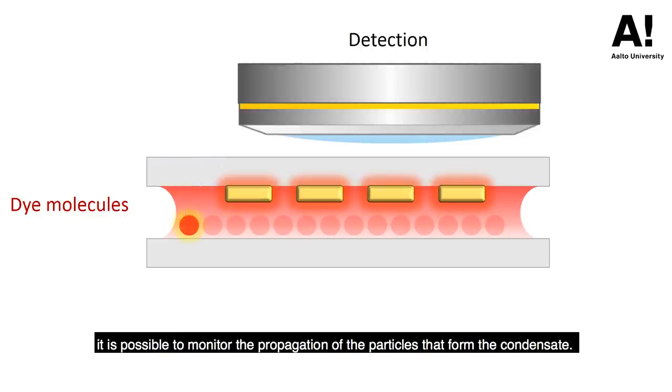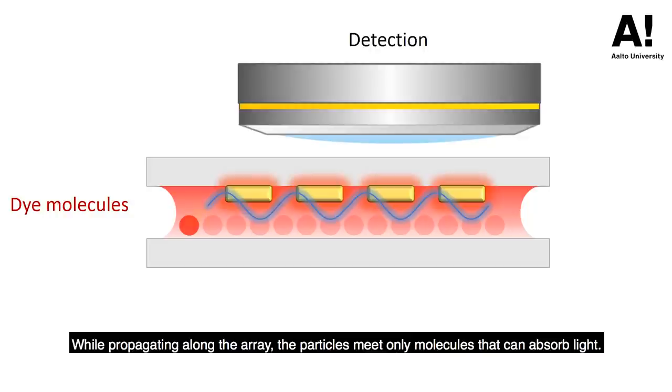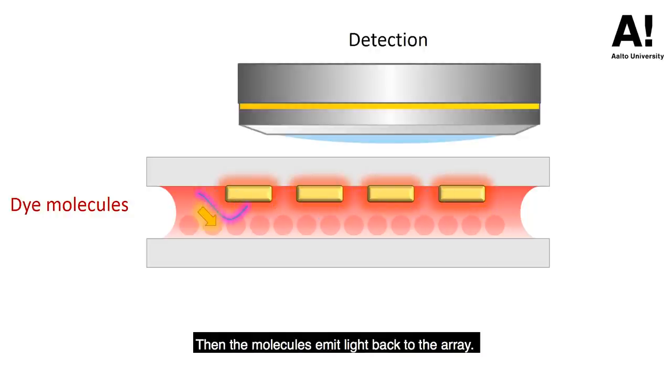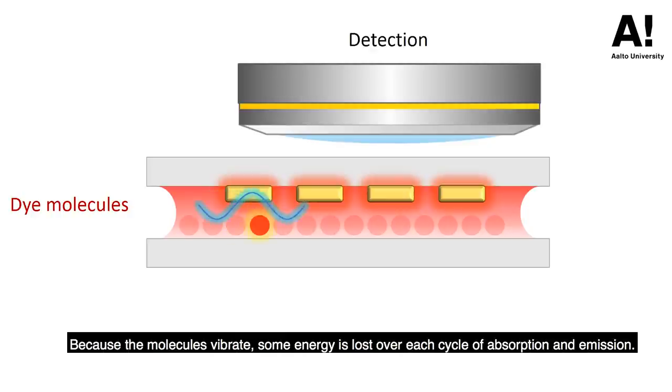While propagating along the array, the particles meet only molecules that can absorb light. Then the molecules emit light back to the array. Because the molecules vibrate, some energy is lost over each cycle of absorption and emission.